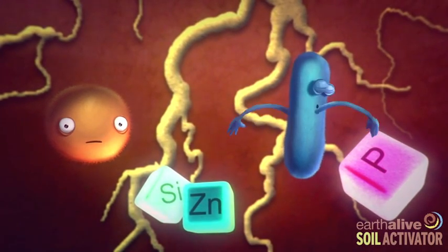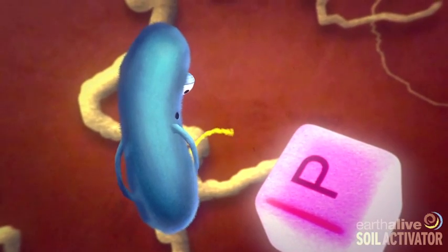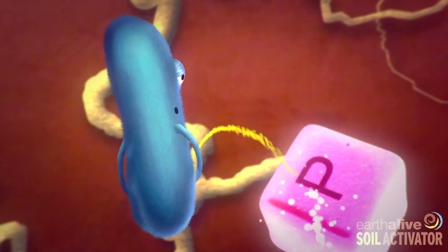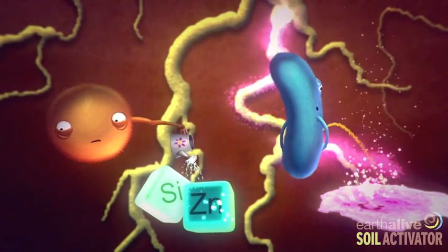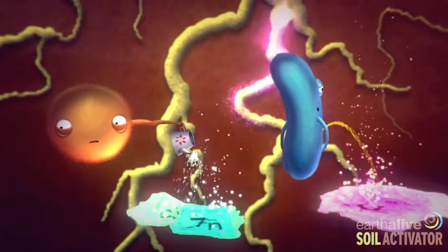Pseudomonads solubilize phosphate contained in the soil, releasing bioavailable phosphorus. Bacilli solubilize silicate and zinc, making it available to the plant.